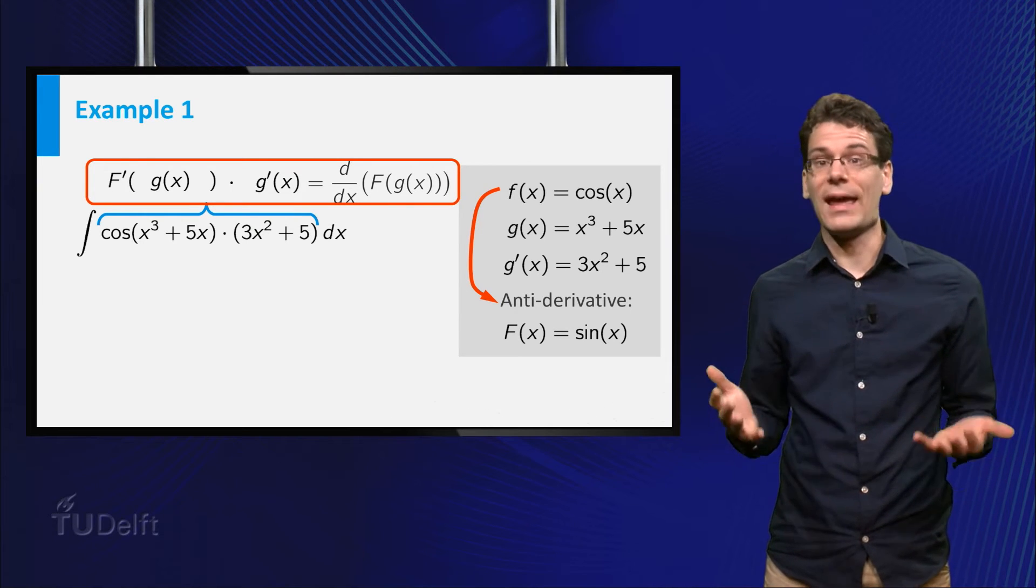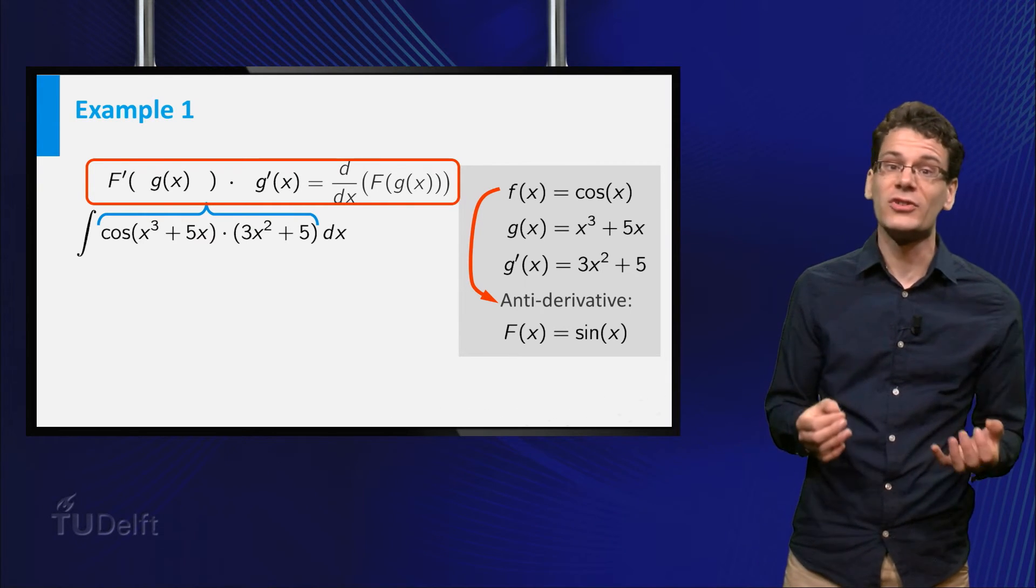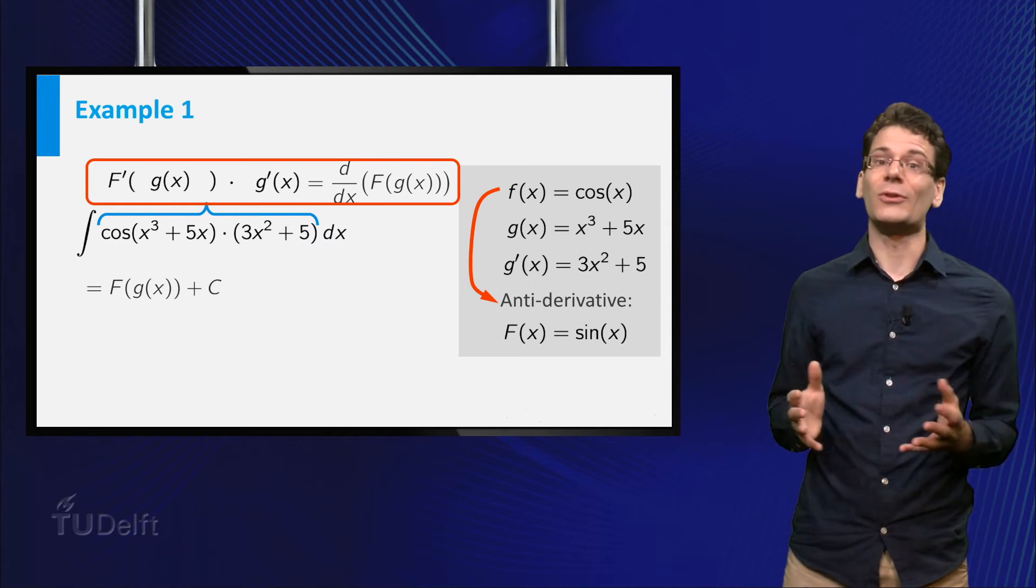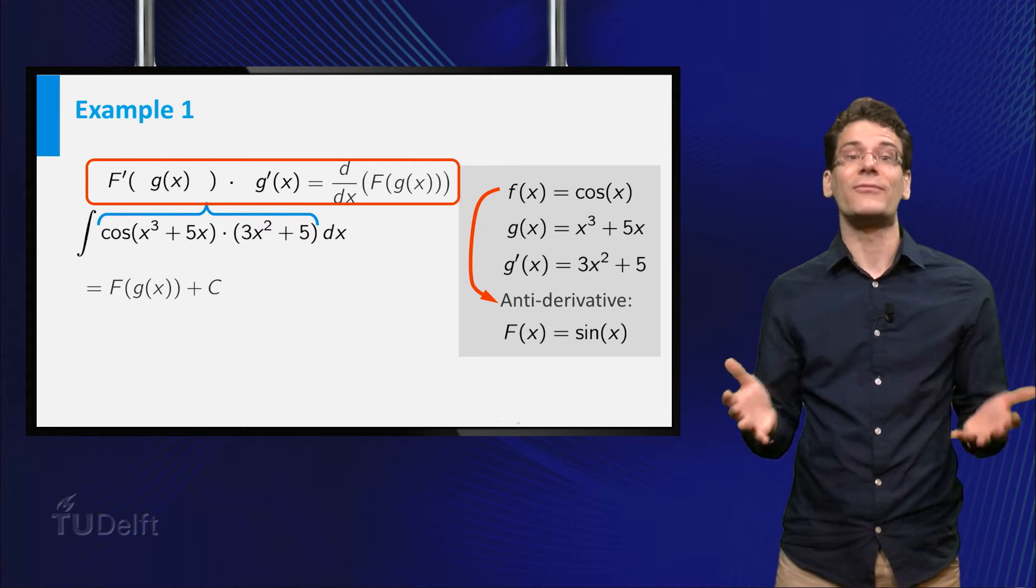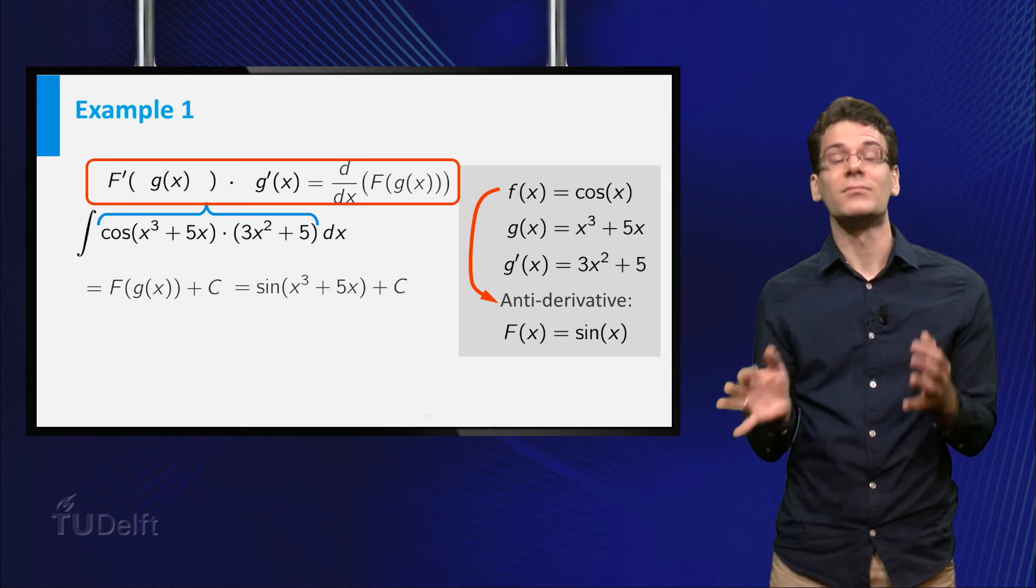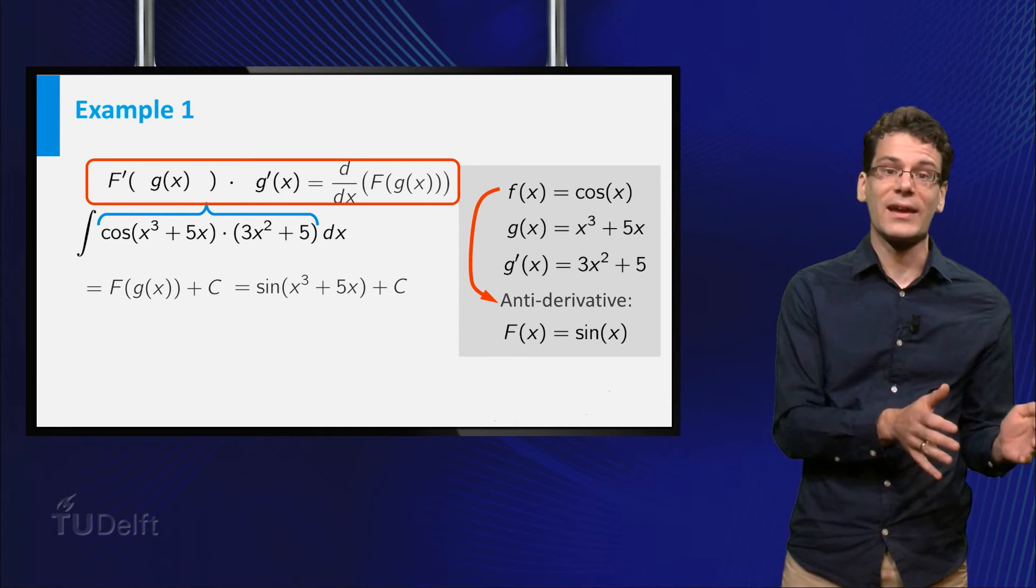So capital F of g of x is a primitive function for the function that we are trying to integrate. Thus we find that the integral is equal to capital F of g of x plus c. That is, sine of x cubed plus 5x plus c.